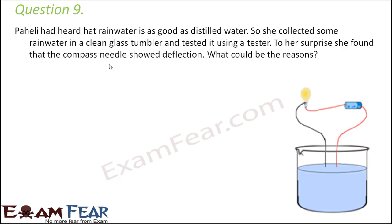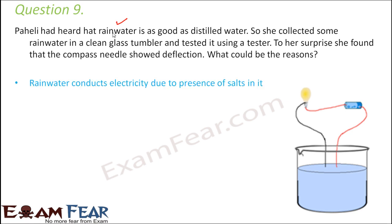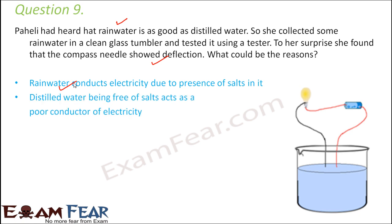Question number nine: Paheli heard that rain water is as good as distilled water. She collected rain water and tested it with a tester, and to her surprise the compass needle showed deflection. The reason is that rain water contains dissolved salts and therefore conducts electricity. Distilled water, however, is completely pure — no salts, no acid, nothing — so it does not conduct electricity. With distilled water the bulb will not glow and the needle will not show any deflection.